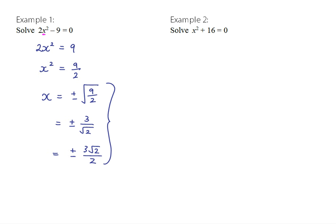In example two, again we only have x in one place, so we should be able to attempt to solve this by rearranging. So x is being squared, then we're adding 16. So we're going to subtract 16 from both sides. And then we're going to attempt to take the square root — but we have a problem: you can't take the square root of a negative value.